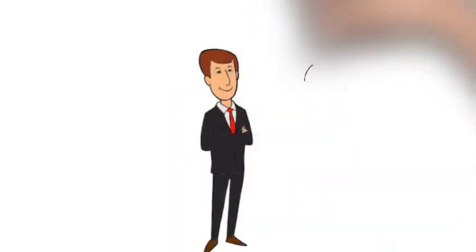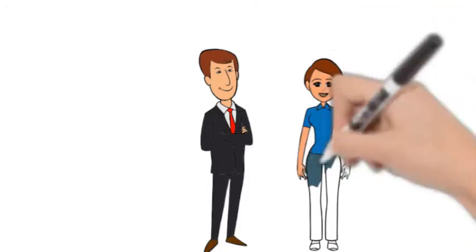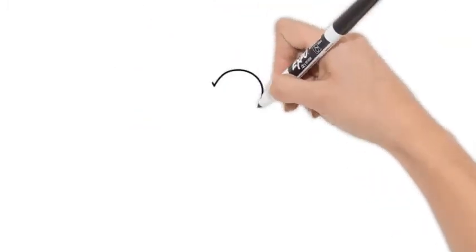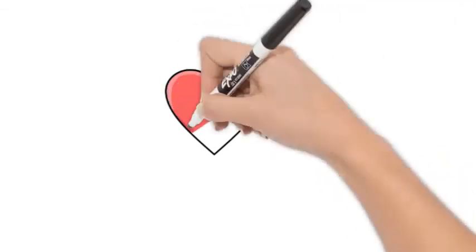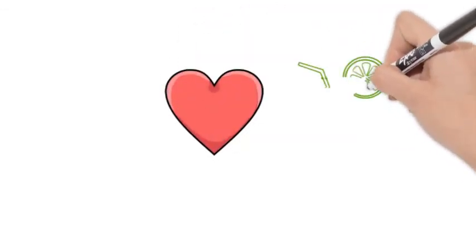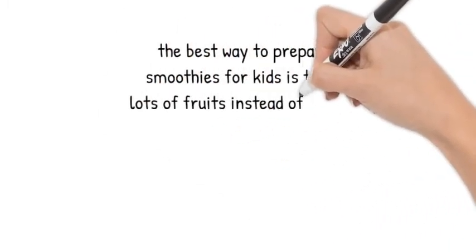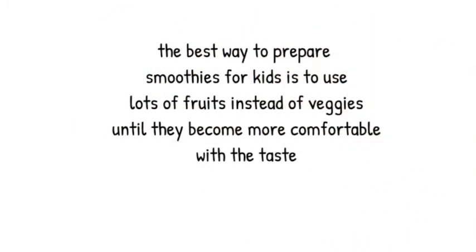A green smoothie is not only good for adults but also for children. Most children don't like, if not hate, vegetables. However, they love to drink a cold glass of chilled smoothie. The best way to prepare green smoothies for kids is to use lots of fruits instead of veggies, until they become more comfortable with the taste.